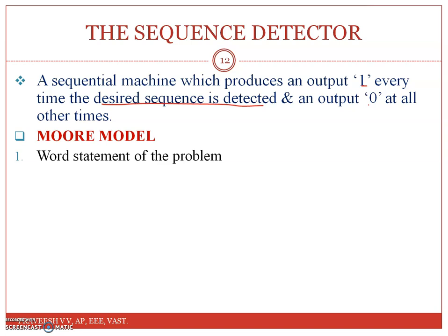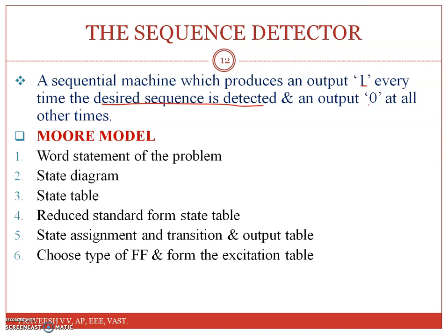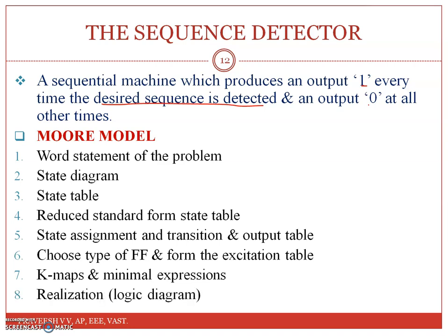We have eight steps. First is the word statement of the problem — that is, what the detector is going to detect. Then the formation of the state diagram, and from the state diagram you have to form the state table. Then the reduced standard form state table with removal of redundant states. Then state assignment — the states need to be converted into binary digits. Then the transition and output table. We will also choose the type of flip-flop; in this case we will be taking a D flip-flop. Then from the excitation table, we obtain minimal expressions for the D inputs using K-maps. Finally, the implementation or realization part — that is the logic diagram.